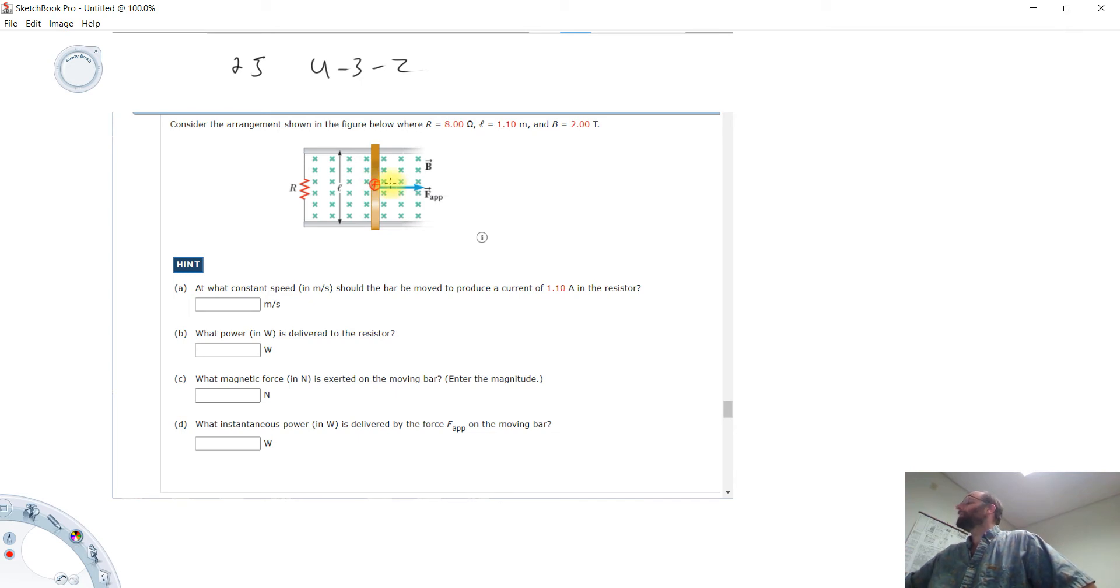Okay this bar is moving to the right through this magnetic field, you should easily conclude there's going to be a force on that bar and which way, and that's going to create an electrical current, and a voltage for that matter.